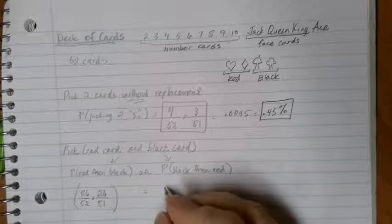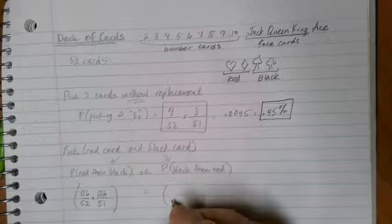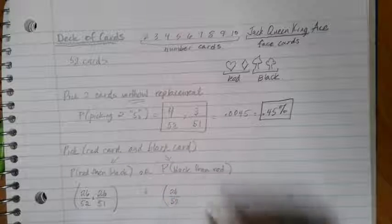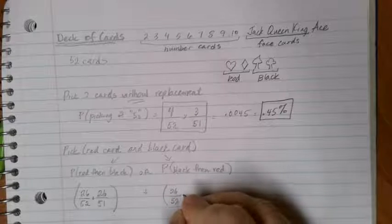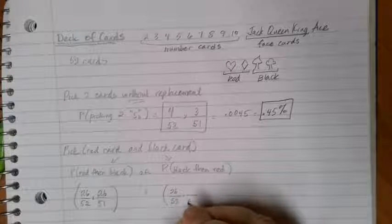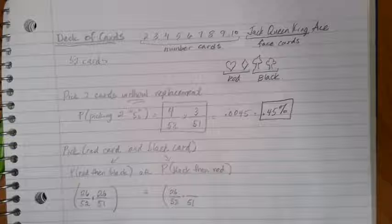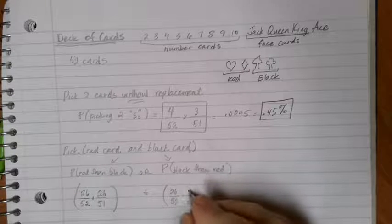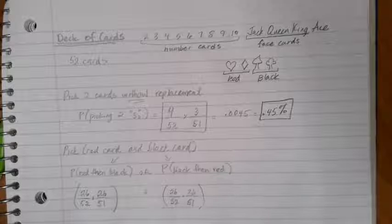If I do black, then red, the same type of thing is going to happen. There's 52 cards in the deck. There are 26 black cards, so I can make my first pick. When I go to do my second pick, there's now only 51 cards because I'm holding a black card in my hand. But there's still all 26 red cards left in the deck for me to choose from.